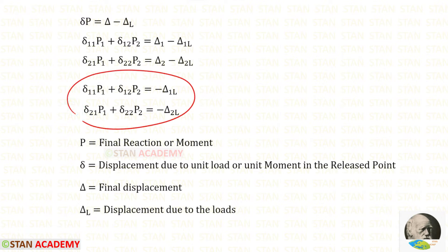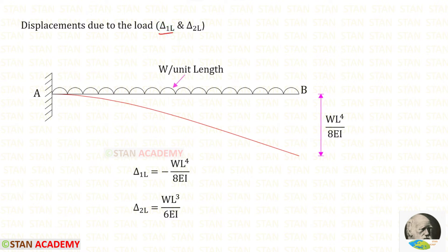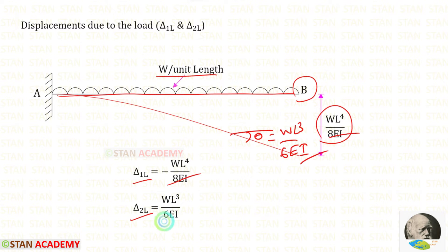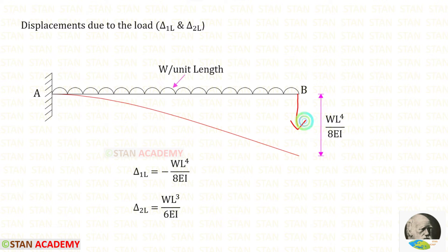In these two equations, let us find delta 1L and delta 2L. Delta 1L is the deflection due to the load and delta 2L is the slope due to the load. For a cantilever beam subjected to a uniformly distributed load over the whole span, the deflection at the free end is WL⁴ upon 8EI and the slope at the free end is WL³ upon 6EI. Since the deflection occurs downwards, delta 1L will be negative and the slope delta 2L will be positive.